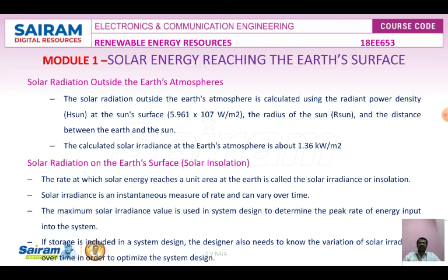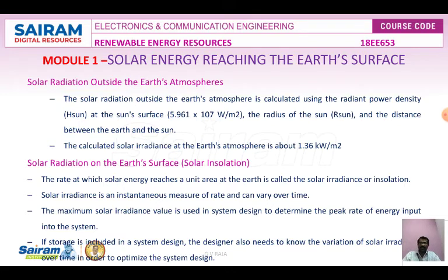Solar radiation outside the Earth's atmosphere is the measurement of energy radiation received from the Sun outside the Earth's atmosphere. It is denoted as ISC. The solar constant is the rate at which energy is received from the Sun on a unit area perpendicular to the rays of the Sun at the mean distance between the Sun and the Earth.